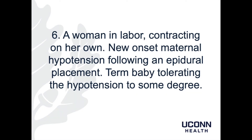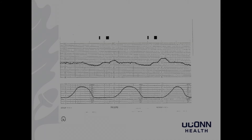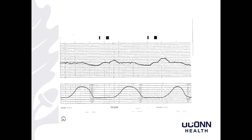Patient 6 is a woman in labor contracting on her own with new onset maternal hypotension following epidural placement. She has a term baby tolerating the hypotension to some degree. My read: baseline of 120s, moderate variability, accelerations are present, and there are positive recurrent late decelerations. This is a Category 2 tracing. You can see the late decelerations after every contraction, and also two accelerations — one in the middle and one to the right of the tracing.